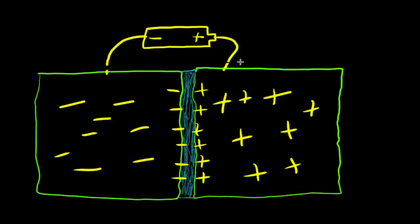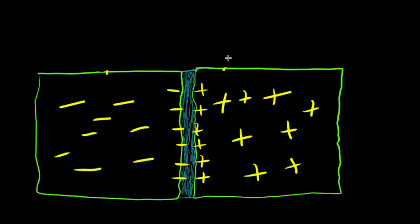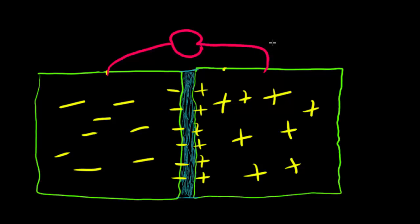Now let's say we disconnected the battery — these plates still have that difference in charge. We then hooked up the same charged capacitor not to a battery but to an LED — and there was also a resistor in there. So when we connected the plates to the LED, the charges began to equalize.